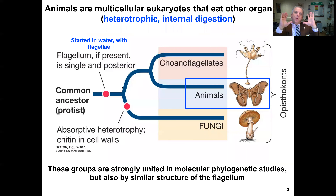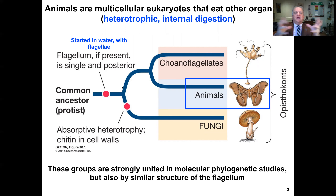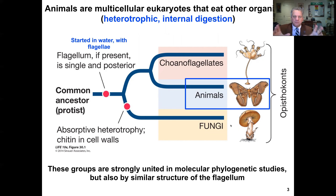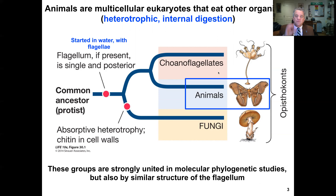We can define animals as multicellular eukaryotes that eat other organisms — they're heterotrophic, not making their own food, and they have internal digestion. The phylogeny places choanoflagellates as the sister lineage to animals, and choanoflagellates plus animals as the sister lineage to fungi. These relationships are strongly supported by molecular phylogenetics and also by a very similar structure of the flagellum when present in cells.